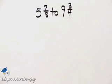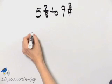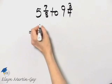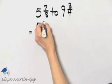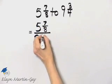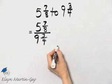We'd like to write this ratio as a fraction in simplest form, so first let's write it as a fraction. 5 and 7 eighths to 9 and 3 fourths as a fraction is 5 and 7 eighths over 9 and 3 fourths.